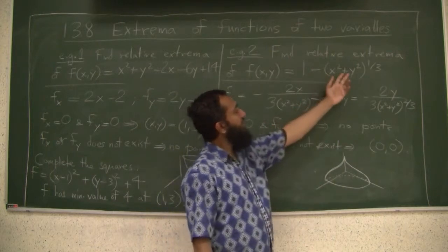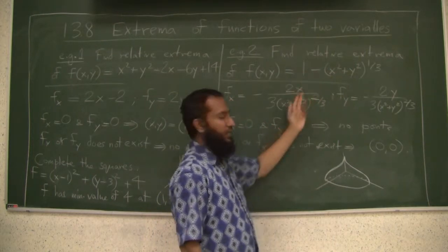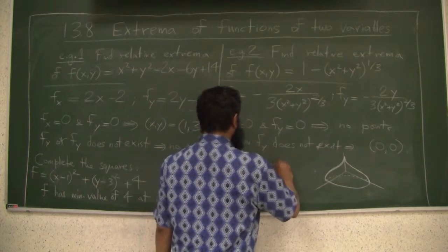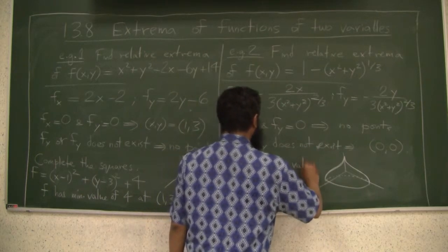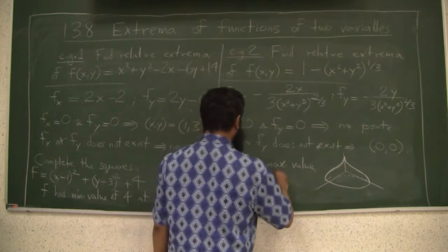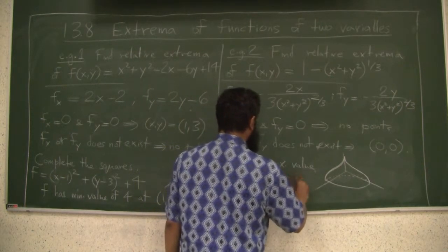How do you know it is a maximum? Because if you start increasing x and y values, you will subtract from one, right? So f has max value of 1 at f(0, 0).